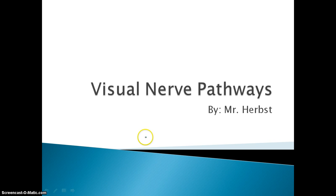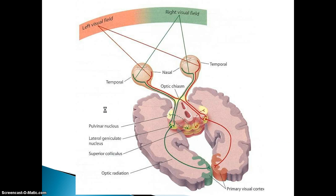Hi everyone, this is Mr. Herbst here, and today's focus is going to be on visual nerve pathways of light and images through the eye and brain. That's a little bit confusing, but think of it like this: you have stuff that you see, and it has to be handled by your brain.